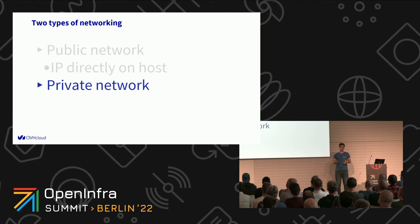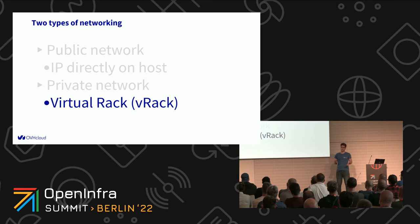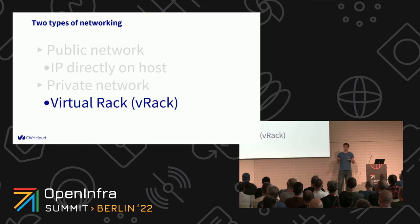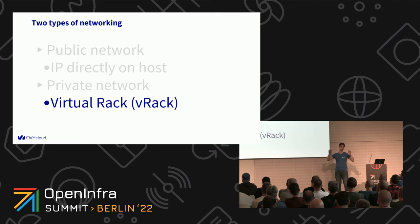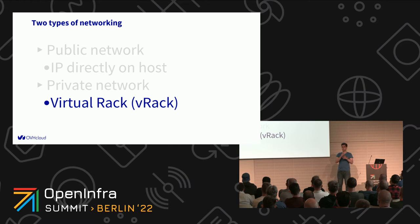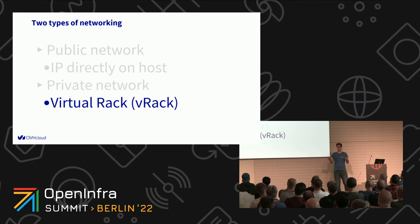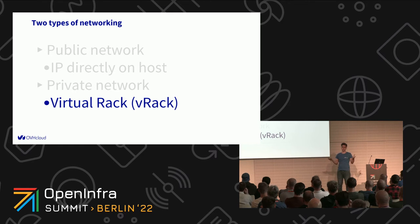For private networking, we developed a technology called Virtual Rack, or VRack for short. This technology enables layer-2 networking between two private servers, no matter where they are — it can be the same rack, two racks, or two data centers hundreds of miles apart. In other words, from the server's point of view, it looks like all servers are connected to the same top-of-rack switch, which is why it's called Virtual Rack.